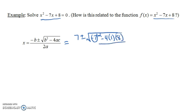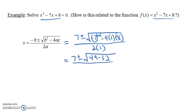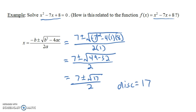With a = 1 and c = 8, all over 2a where a = 1. So we get 7 plus or minus the square root of 49 - 32, all over 2. That's 7 ± √17 over 2. Notice that the discriminant is 17 — a positive number — and we have two solutions.